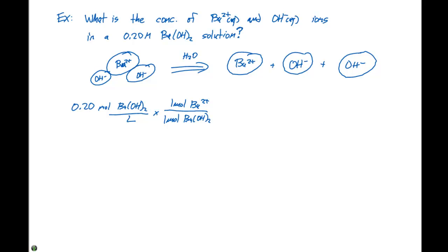Since we have a one-to-one ratio, that means we have 0.20 moles of barium 2+ per liter of solution, or our concentration of barium ions is 0.20 molar Ba²⁺.